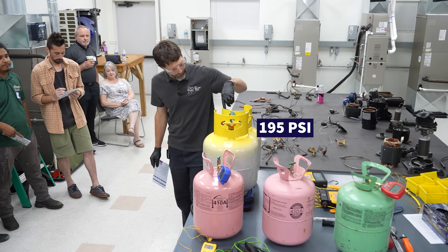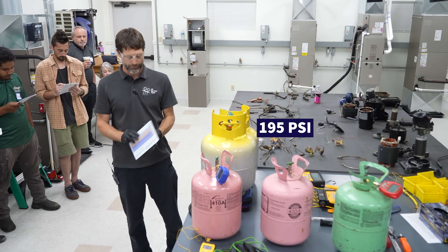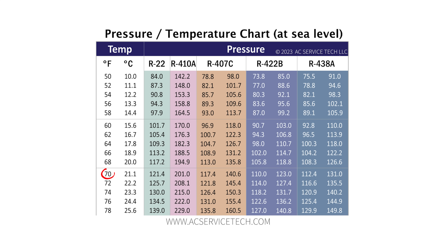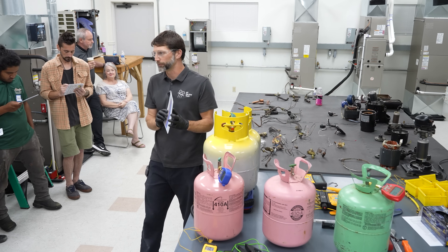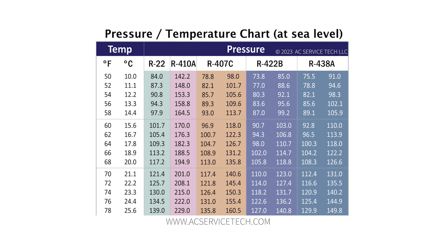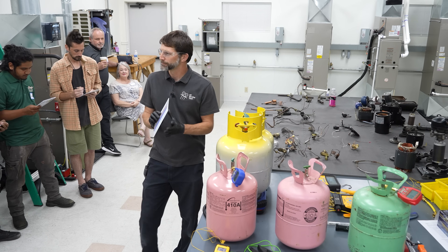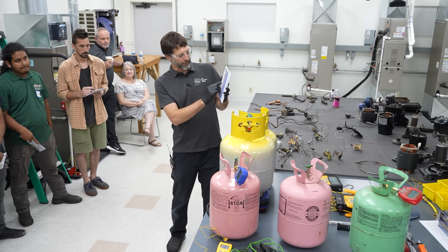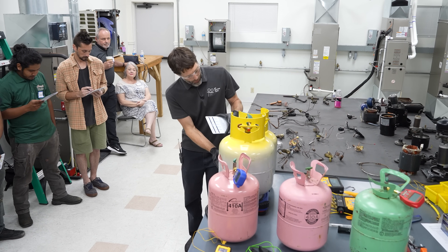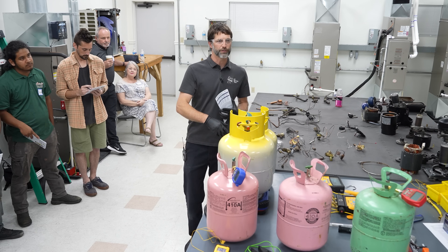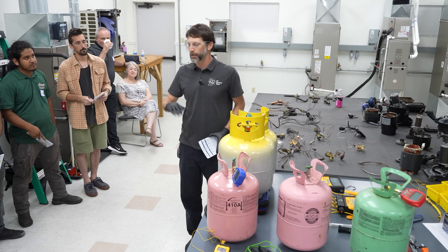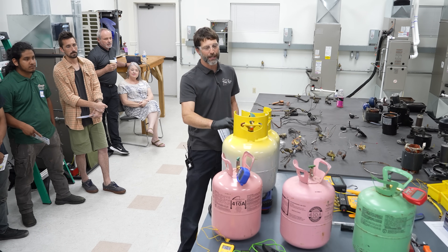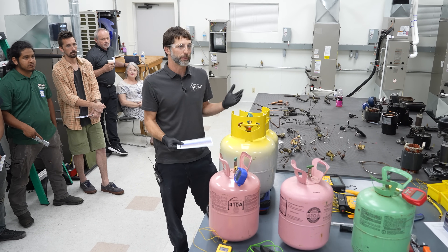On this next recovery bottle, the pressure is 195 PSI. Taking 70 degrees and going across horizontally on the PT chart, R410A is the closest match — and that's because this bottle has R410A inside. If you had accidentally gotten air in the tank, the pressure would be higher and you wouldn't really know what refrigerant is in there. That would be a contaminated recovery tank.